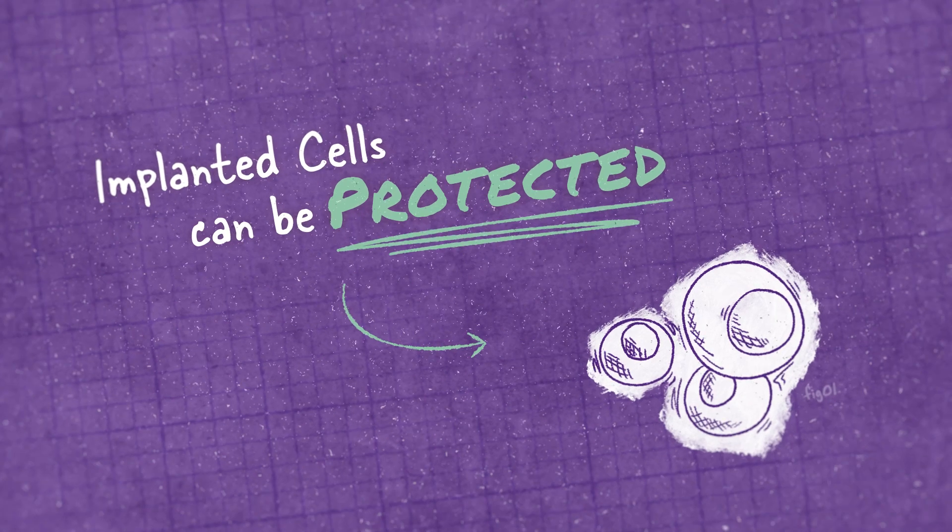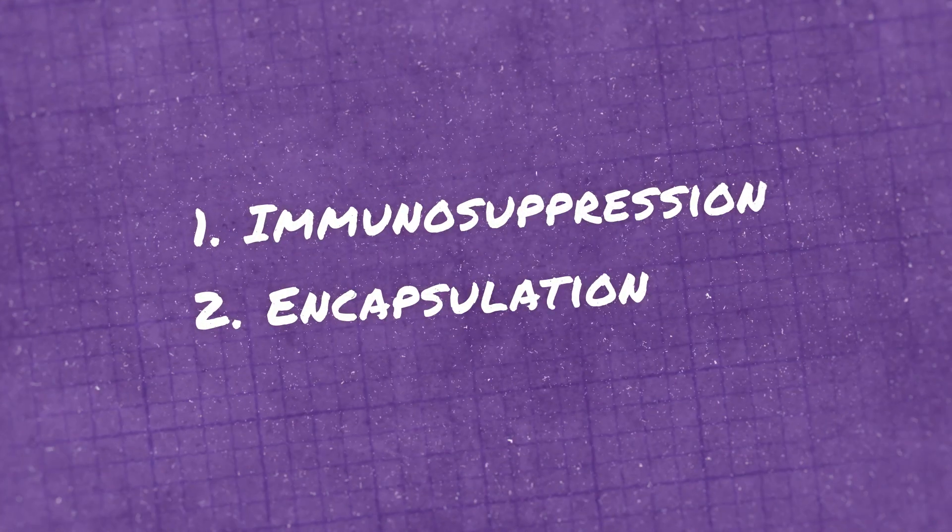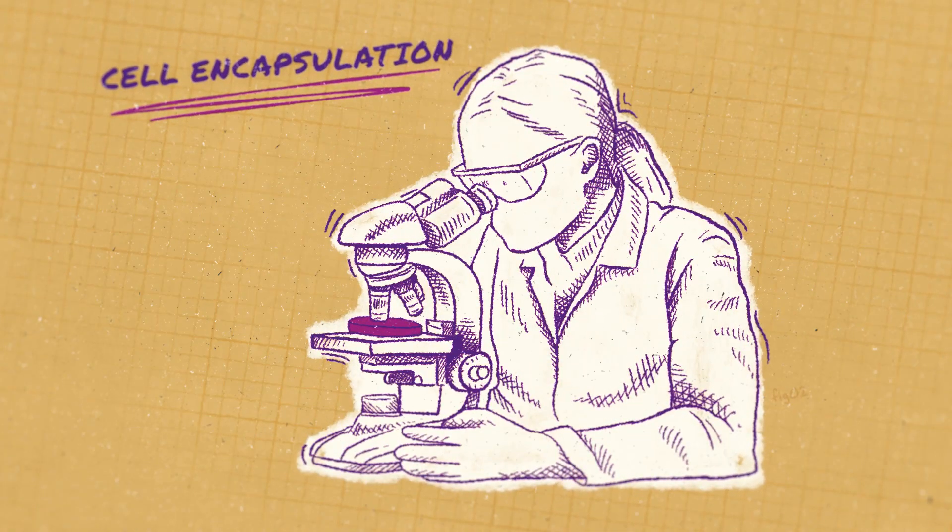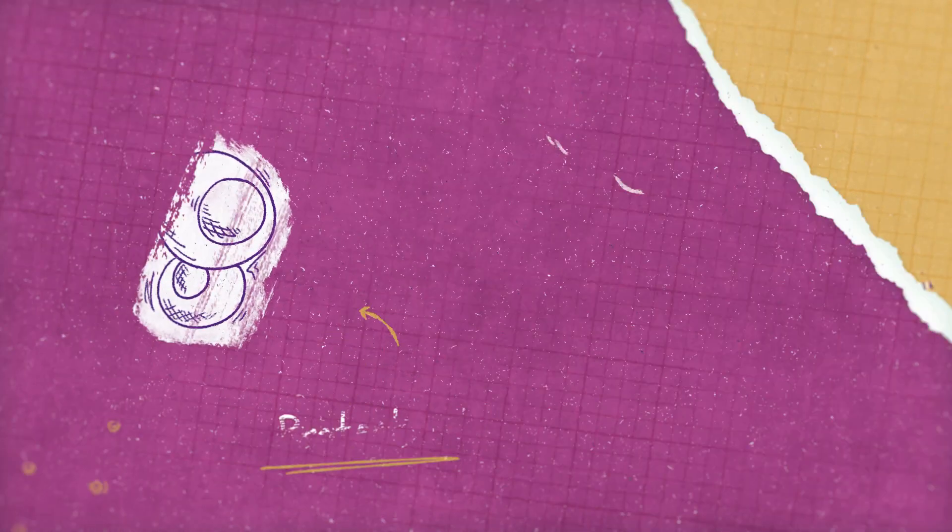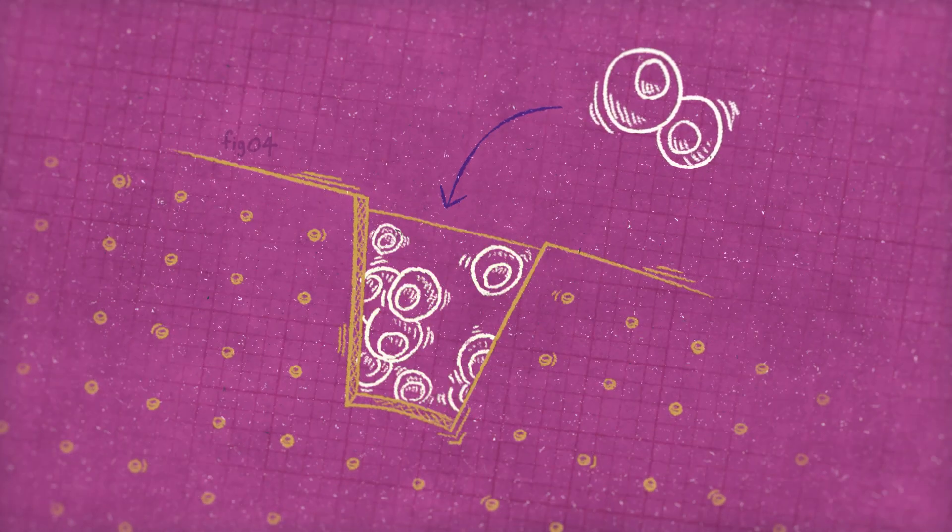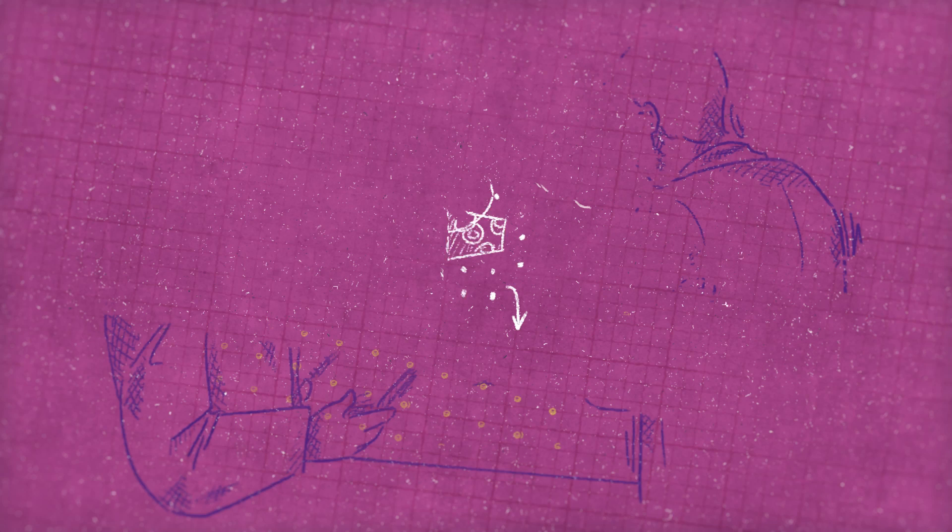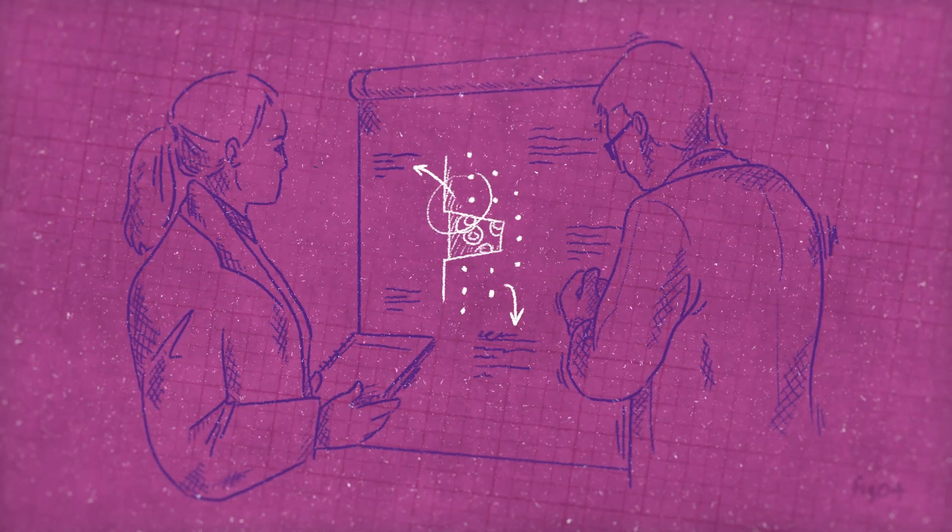Implanted cells can be protected through a few potential methods, including cell encapsulation. Cell encapsulation is one approach being investigated to provide protection from the immune system by placing enough living cells to be potentially therapeutic within a specially designed encapsulation device.